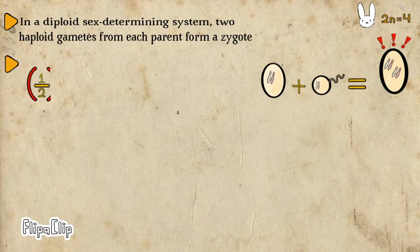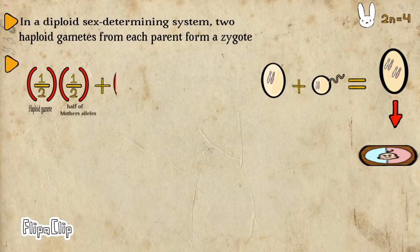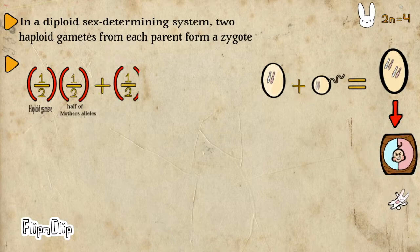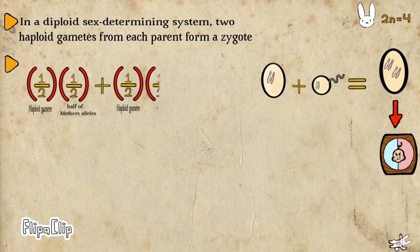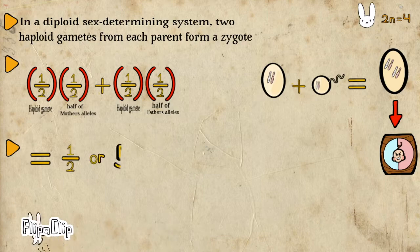Offspring will get half of their genes from the mother, with the mother giving a gamete with half of her alleles. The other half of the individual's genome comes from the father, who will also give half of his alleles in a gamete. Mathematically, this gives us a 50% relatedness between siblings.